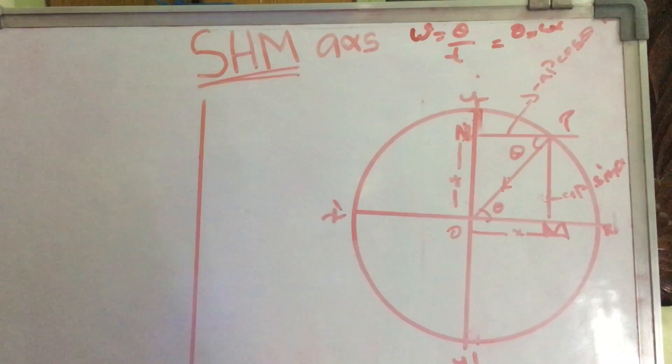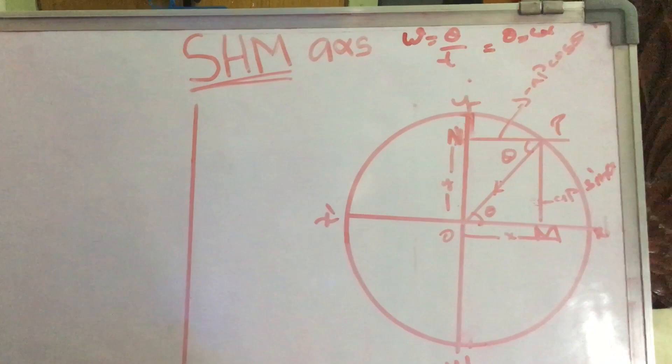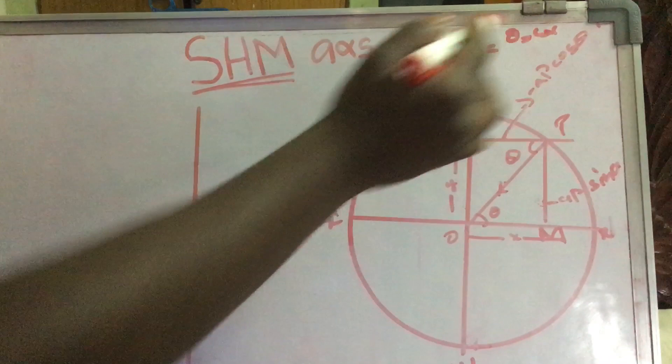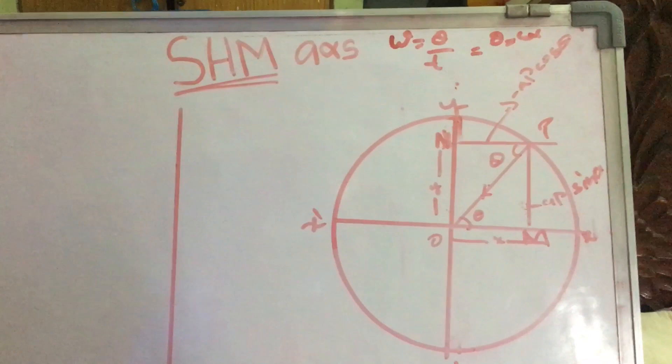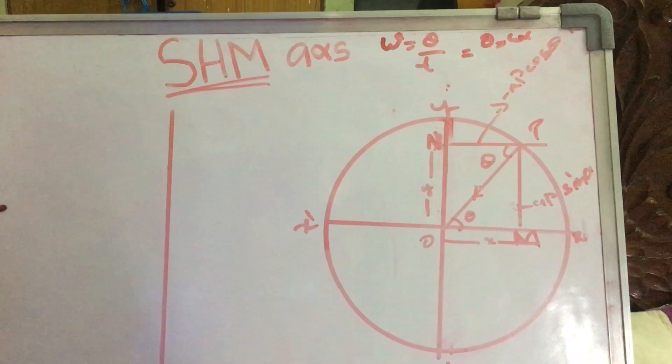First, we need to know the triangle and we have the sin omega. We should know that omega is equal to theta by t, theta is equal to omega t. Now we are going to do the formation of the problem. I am not explaining the theory part, going directly to the main steps. This is an important question.